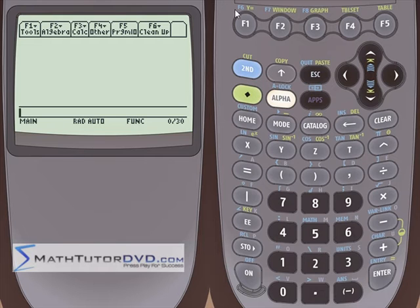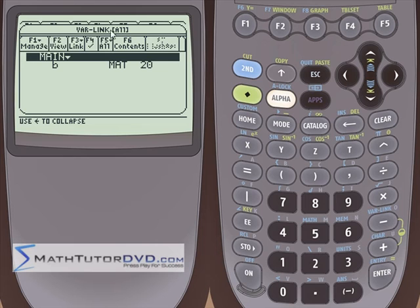Now, what if you don't want to clear all of your variable names? That's very likely. The easiest way to clear individuals is to go over here to the var link menu. Second function var link and it's going to list your variables. You might have to scroll down, but eventually in the main folder, I have got something named B. MAT means matrix.